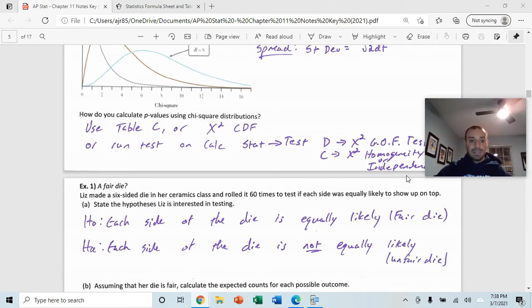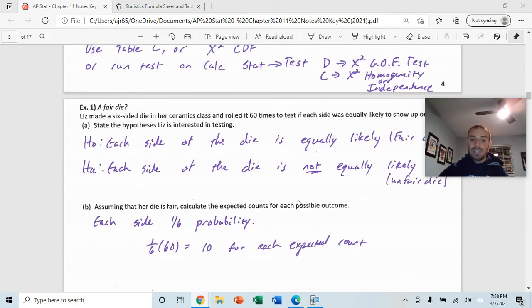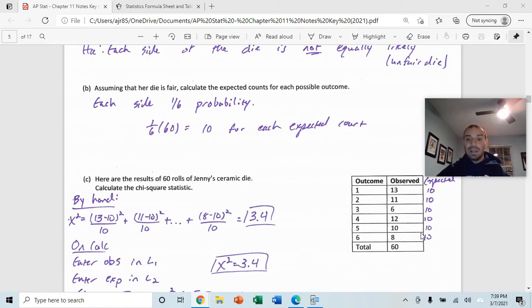So, this example says, Liz made a six-sided die in her ceramics class and rolled it 60 times and tested if each side was equally likely to show up on top. Our null hypothesis is that each side of the die is equally likely, a.k.a. it's a fair die. If we're asked to find the expected counts, it's pretty easy on this one, because we would expect that each side has a one-sixth probability. So, if we take that probability, for example, the probability of it rolling a one is one-sixth, we multiply that times the total number, which is 60. One-sixth times 60 is equal to 10. So, we would get 10 for each of our expected counts.